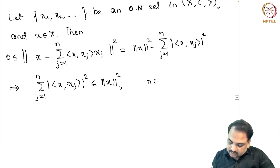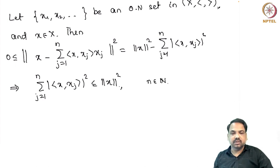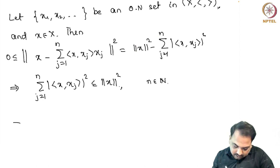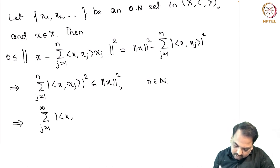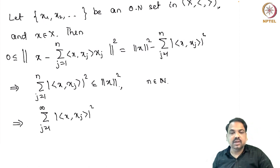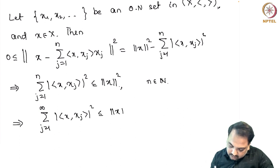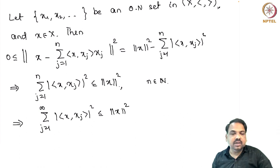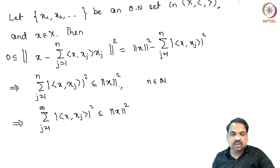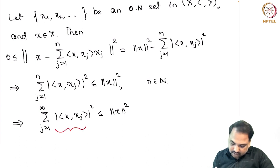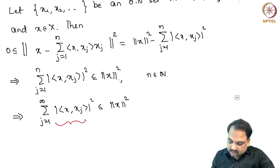Now, this holds for any n. So from this we can conclude that Σⱼ₌₁^∞ |⟨x, xj⟩|² ≤ ‖x‖², because the nth partial sum of this series contains only positive terms, is increasing, and is bounded above by ‖x‖². Hence it must be convergent. This inequality is well known as Bessel's inequality.